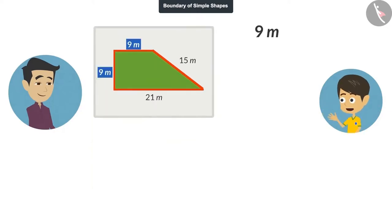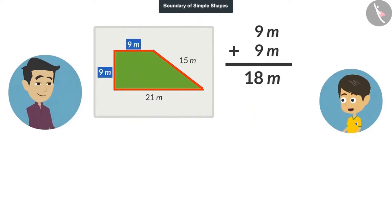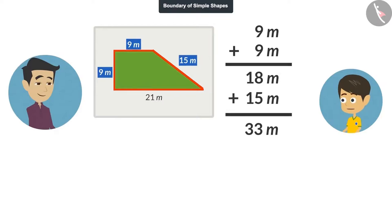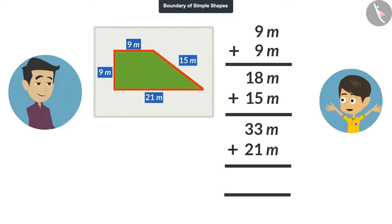If you add 9 meters to 9 meters, the answer will be 18 meters. If we add 15 meters to 18 meters, the answer will be 33 meters. And if we add 21 meters to 33 meters, the answer will be 54 meters. That means the boundary of this field is 54 meters.